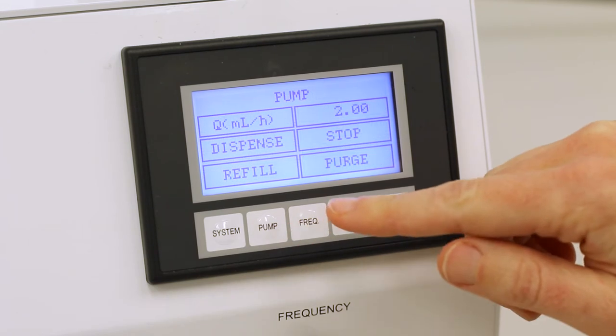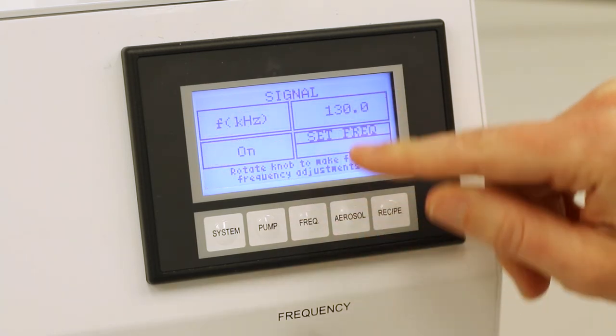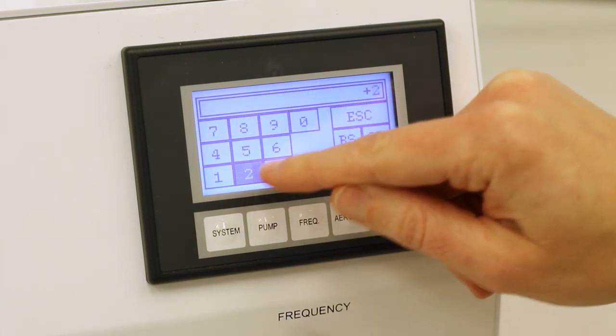Next, I'll set the liquid flow rate to the desired 2.0 milliliters per hour and I'll set the frequency to the desired value of 220 kilohertz.